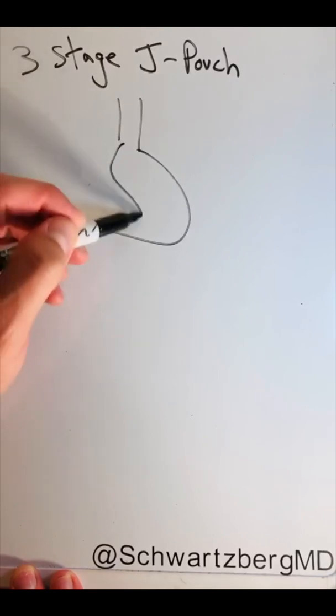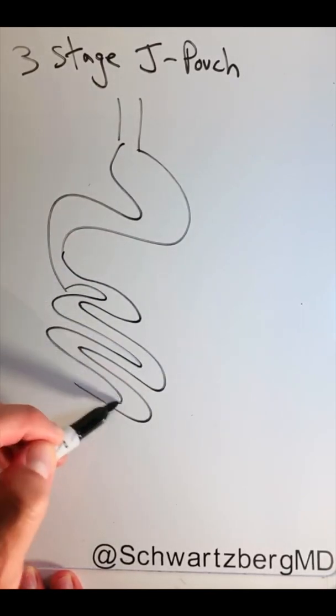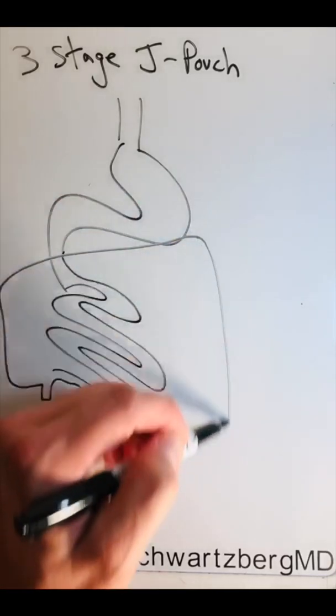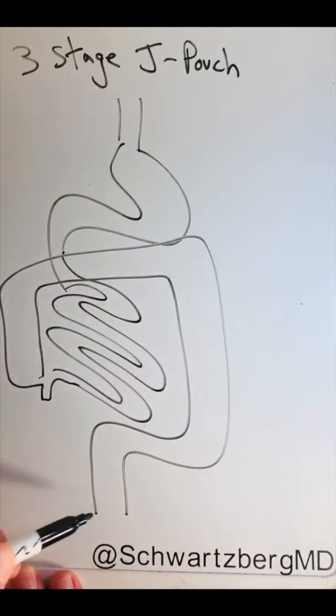We are commonly performing a three-stage J-pouch because a lot of patients are being tried on a lot of medications before they need definitive surgery. And so in that situation, if the patient's very sick or malnourished or been on steroids or biologics, the safest thing to do is to do a three-stage J-pouch.